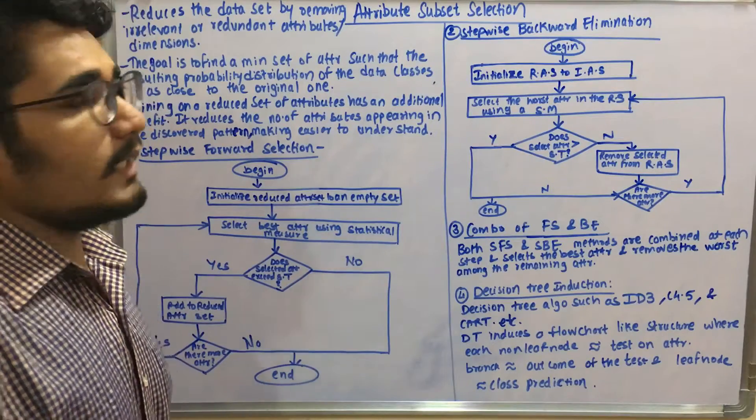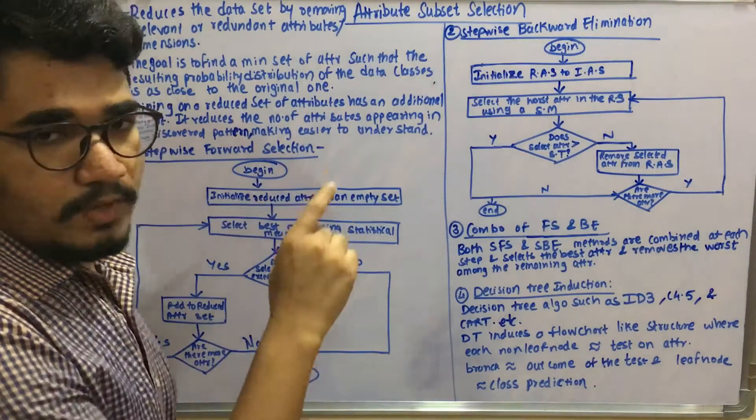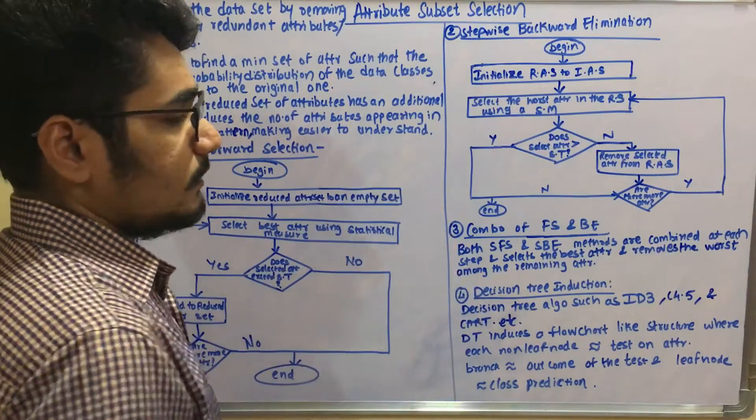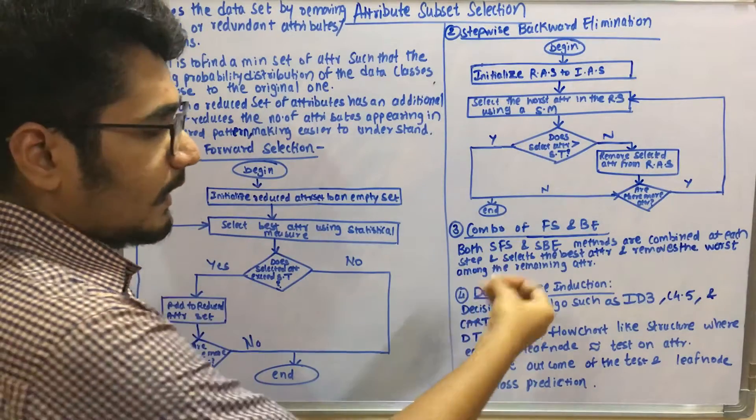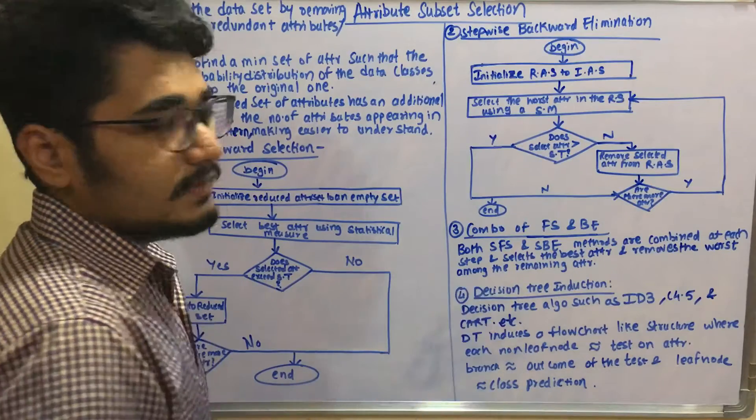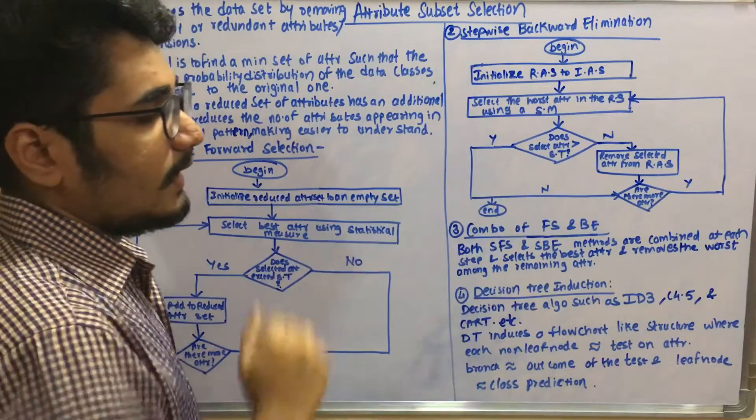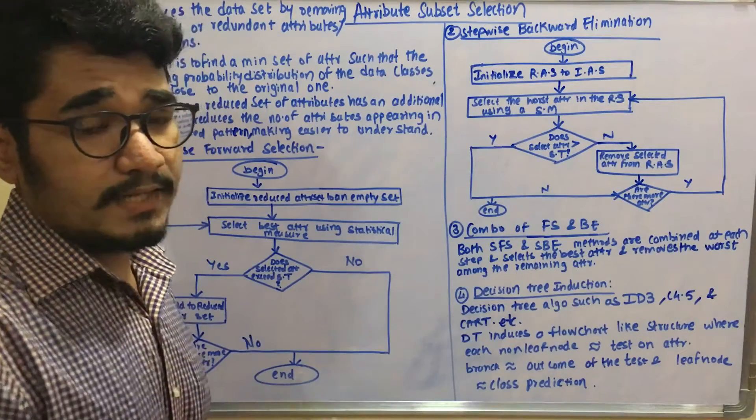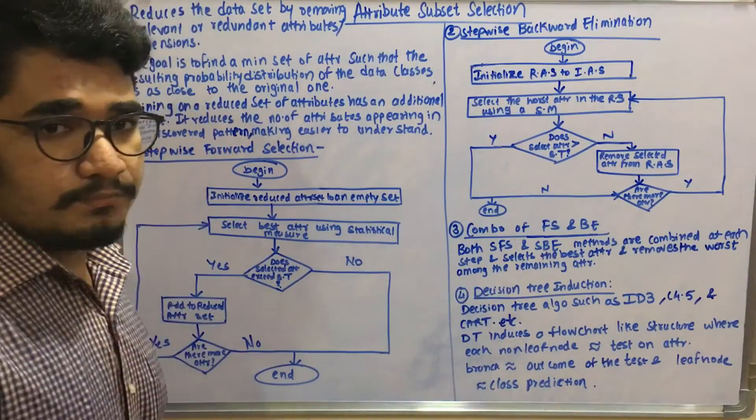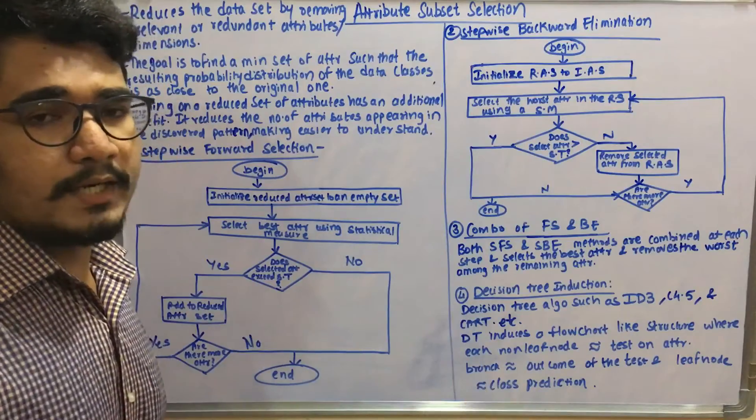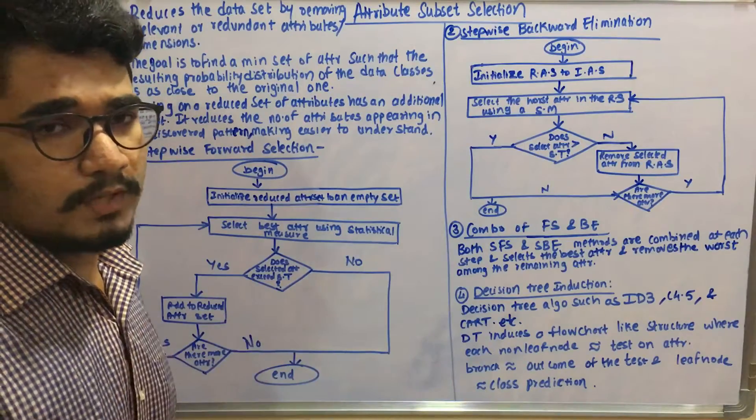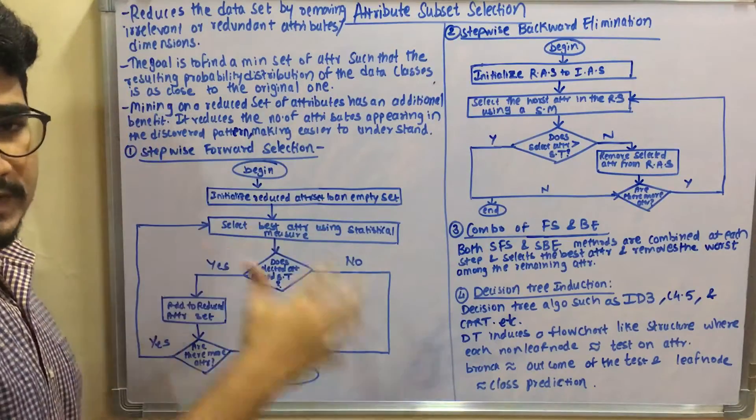The fourth strategy for attribute subset selection is decision tree induction. For representing certain representations, you have decision tree algorithms such as ID3 (Iterative Dichotomizer 3 algorithm), C4.5 which is a statistical classifier, and CART (Classification and Regression Tree algorithms). If you induce a decision tree or plot a graph, you'll probably have a flowchart like this.